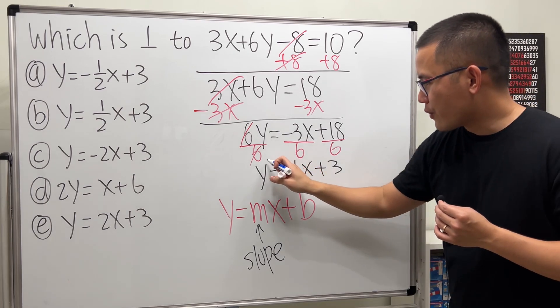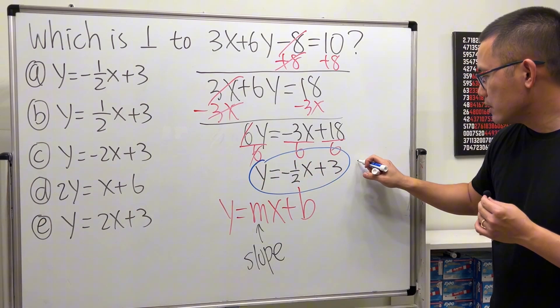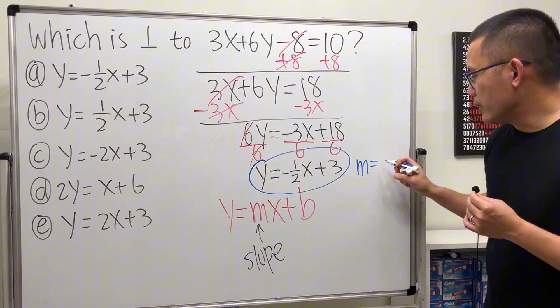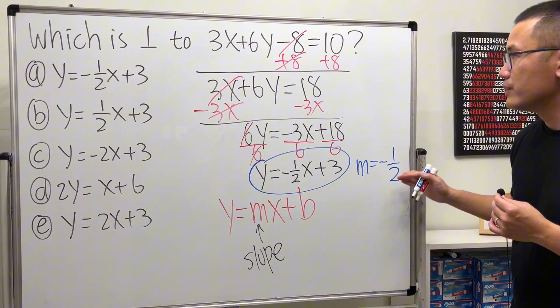So, from here, we can see the slope m is equal to negative 1 over 2 from the original.